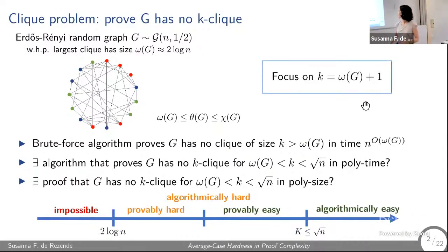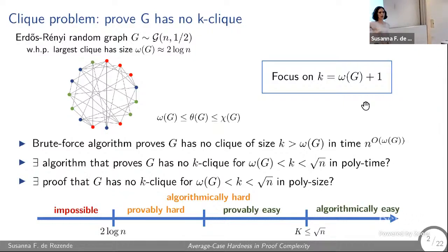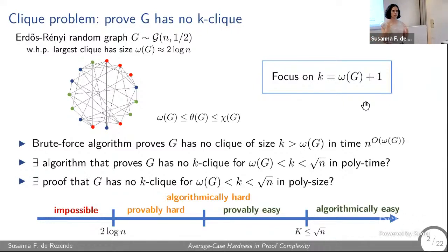For now I'll mostly focus on what happens when you choose k to be one larger than the clique number of the graph — this is close to the impossible threshold. The results will mostly work for larger values of k, but to focus on the hardest possible case, we can ask: what can we prove in this scenario?